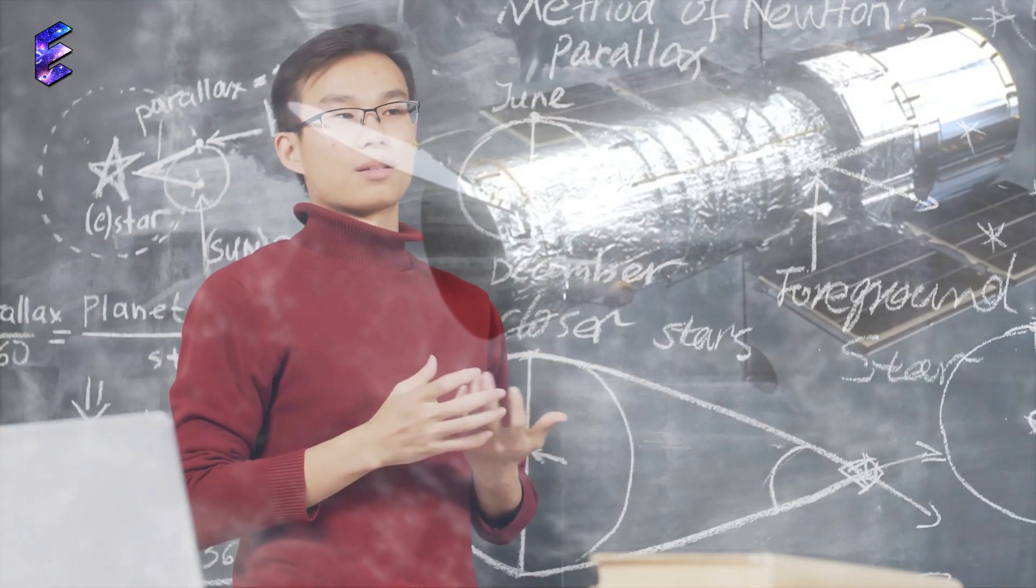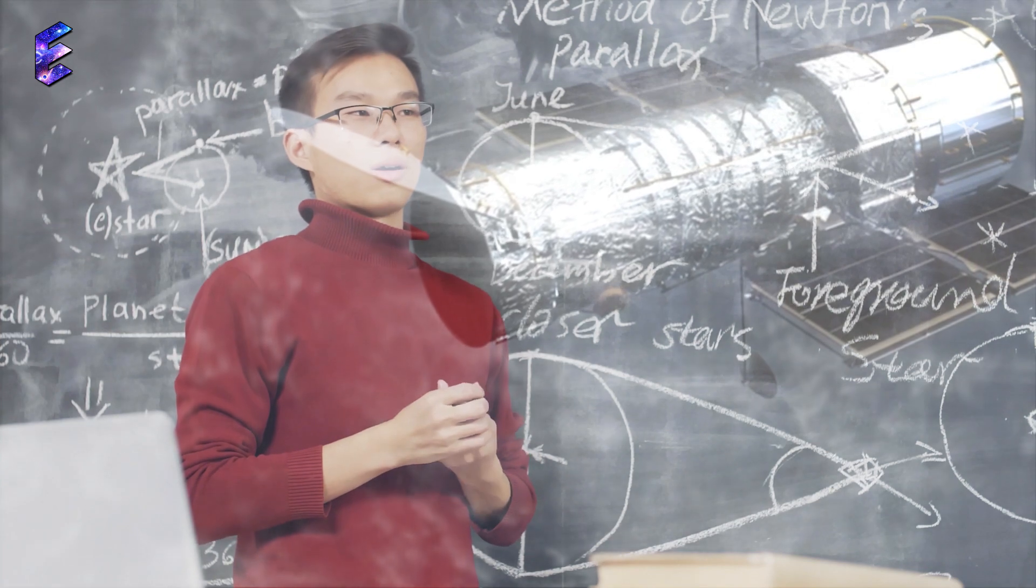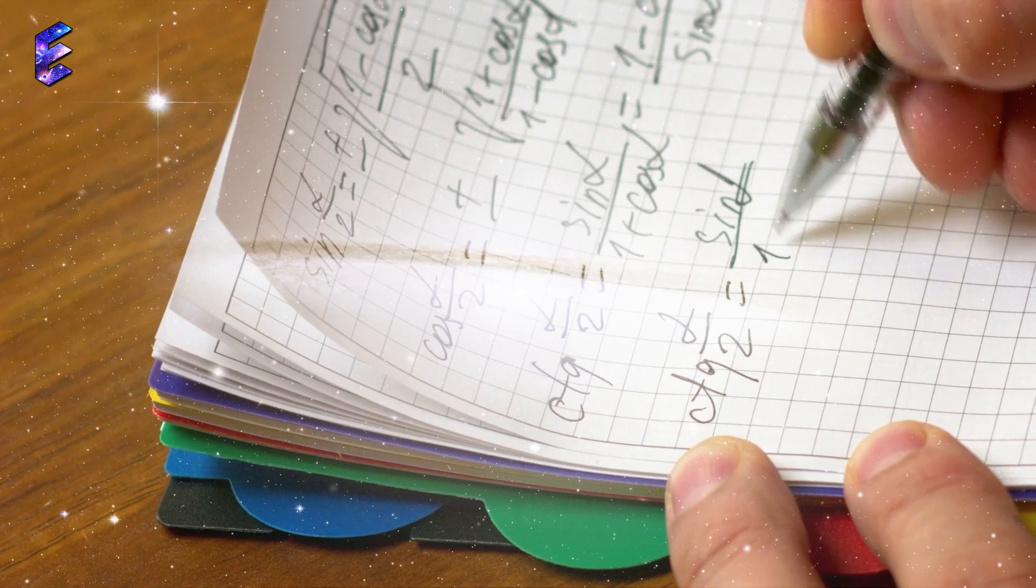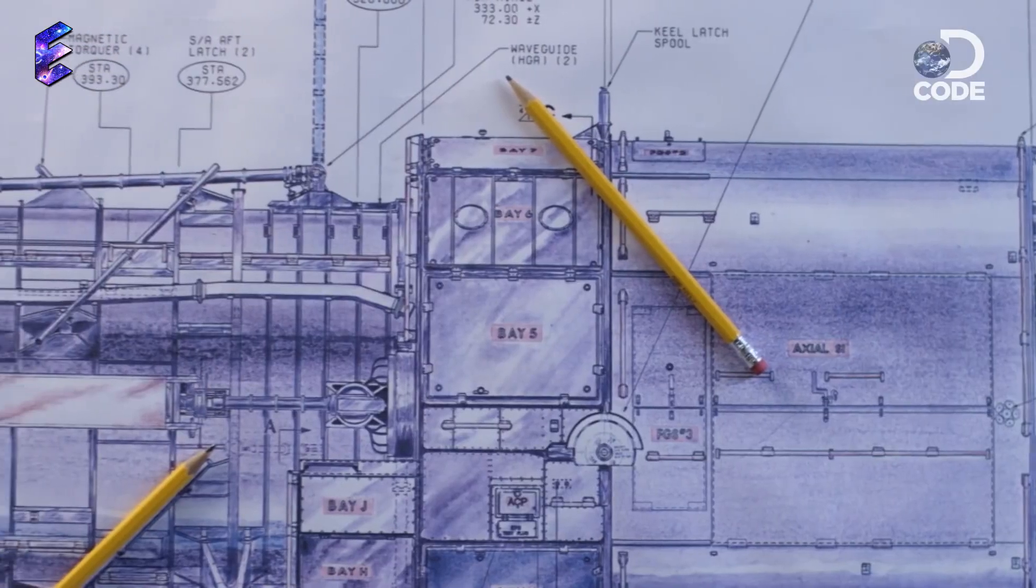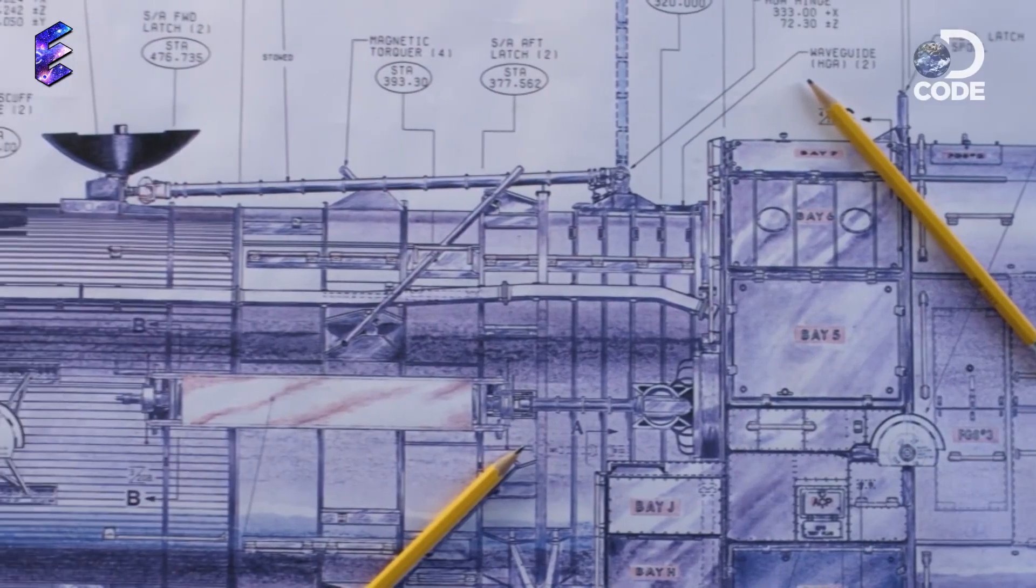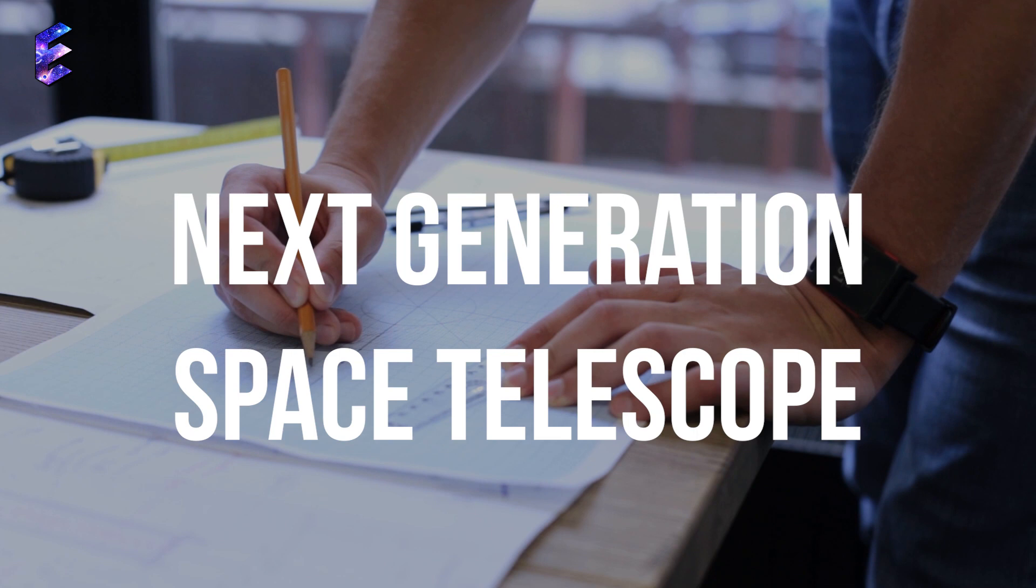His team protested, saying that they have more than enough to do with Hubble. Giacconi insisted, however, so his team set to work creating concept designs for what was then known as the Next Generation Space Telescope.